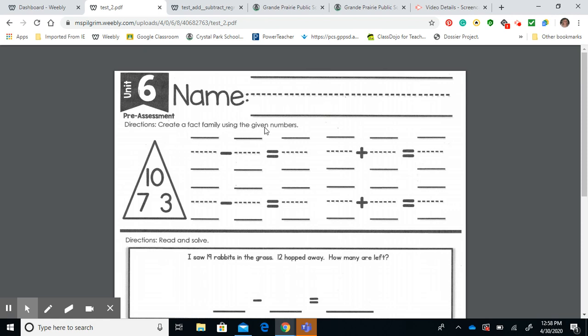Create a fact family using the given numbers. You can take these three numbers, create two subtraction equations and two addition equations. The key thing to remember is always look for the largest number for subtraction, and the largest number is always the answer in addition.